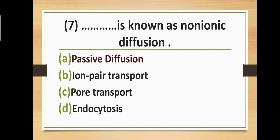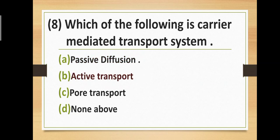Question number seven: Blank is known as non-ionic diffusion. Option A: passive diffusion. Option B: ion pair transport. Option C: polar transport. Option D: endocytosis. The correct answer is option A — passive diffusion. Passive diffusion is known as non-ionic diffusion.